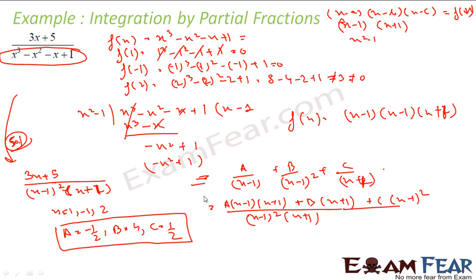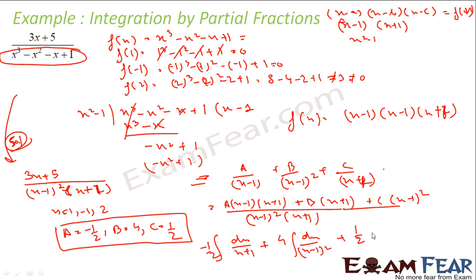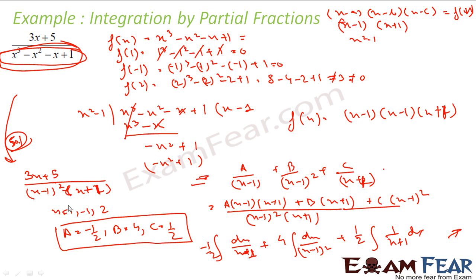The integral converts to: (−1/2)∫dx/(x + 1) + 4∫dx/(x − 1)² + (1/2)∫dx/(x + 1). The log terms are straightforward: log|x − 1| and log|x + 1|. The middle term 4∫(x − 1)⁻² dx gives −4/(x − 1). The main challenge was factoring the denominator and setting up the correct partial fraction pattern.